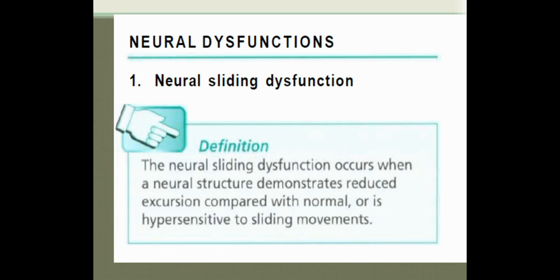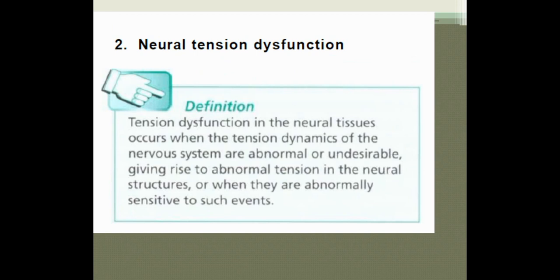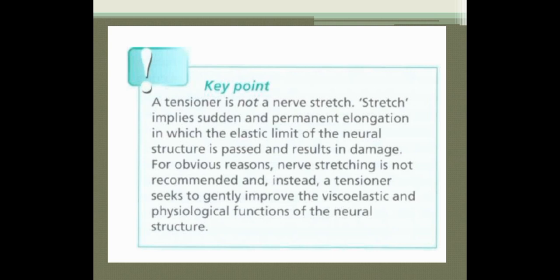Neural sliding dysfunction occurs when the neural structure demonstrates reduced excursion compared with normal or is hypersensitive to sliding movement. Excursion means the movement of the nerve — when sliding of the nerve is abnormal, it is called neural sliding dysfunction. Tension dysfunction occurs when the tension dynamics of the nervous system are abnormal or undesirable, giving rise to abnormal tension in the neural structure. Key point: a tensioner is not a stretch. Stretch implies sudden and permanent elongation in which the elastic limit is passed and results in damage; instead, a tensioner seeks to gently improve the viscoelastic and physiological function of the neural structure.